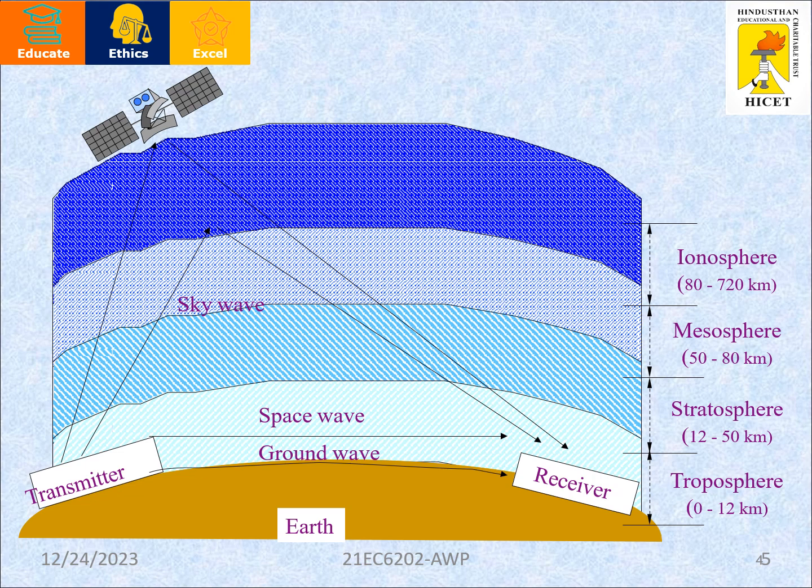The signals propagated through the earth's surface constitute ground wave. Signals transmitted up to 12 km to 50 km distance and reflected back to the earth represent space wave propagation. Signals transmitted up to 720 km distance and reflected back to the receiver represent sky wave propagation.